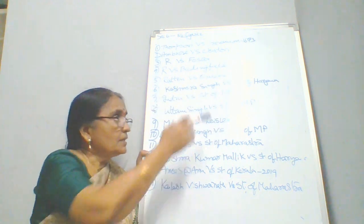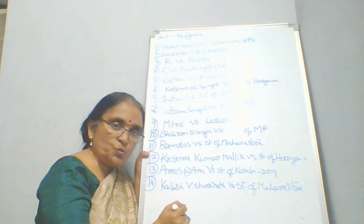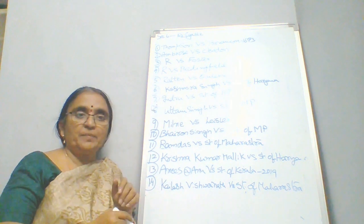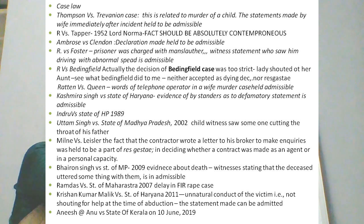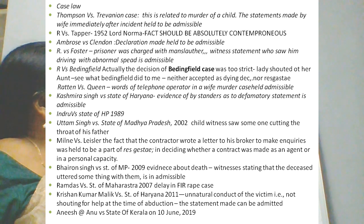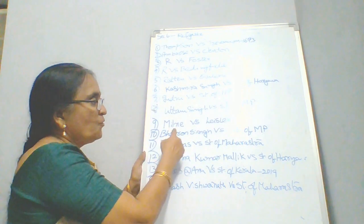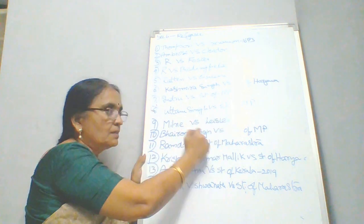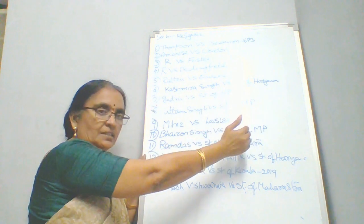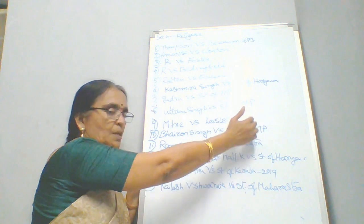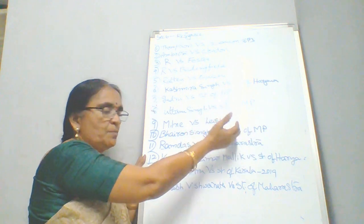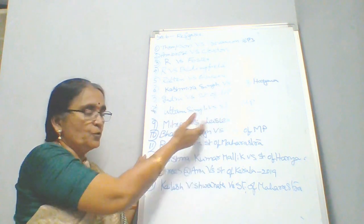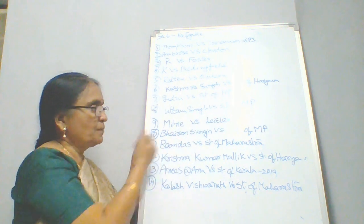In Kashmir Singh versus State of Haryana, a person regularly used to harass a lady with defamatory statements in front of bystanders. The court held that those defamatory statements made before bystanders are admissible as evidence. In Sindhru versus State of Himachal Pradesh, a contractor tried to escape liability by claiming he was working as an agent. To decide whether he was working on his own capacity or as an agent, statements made before brokers and correspondence with brokers were held to be relevant and admissible as part of the same transaction.